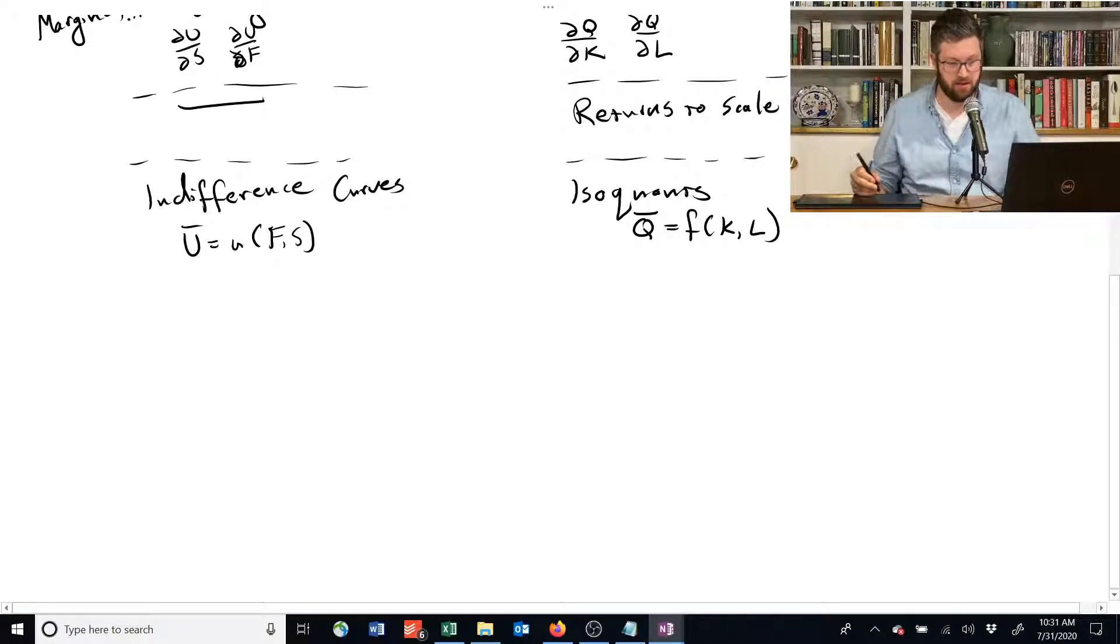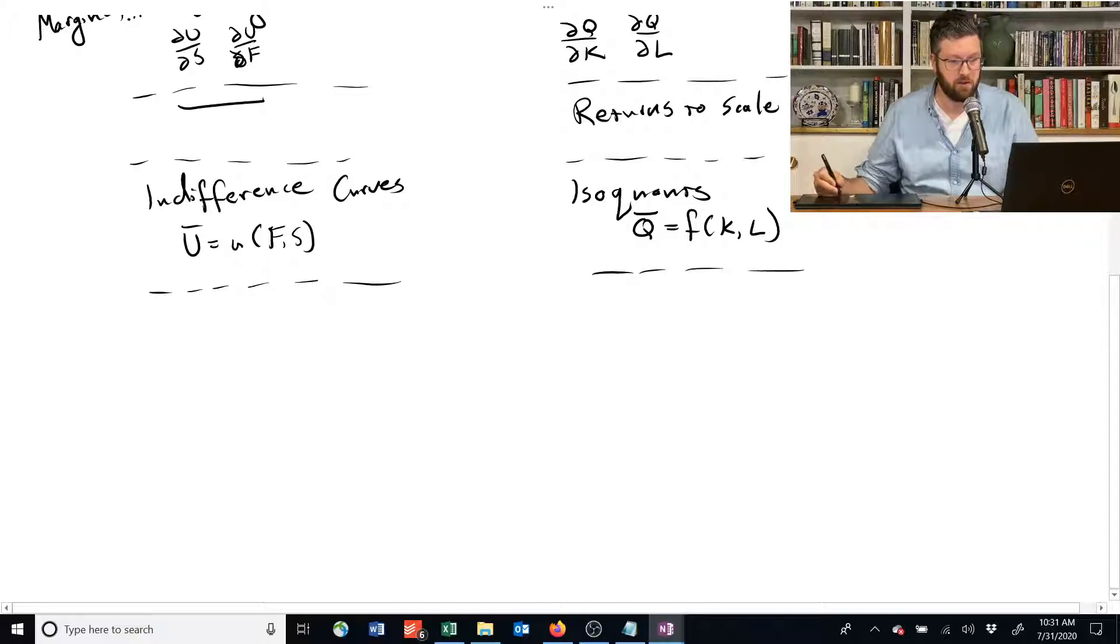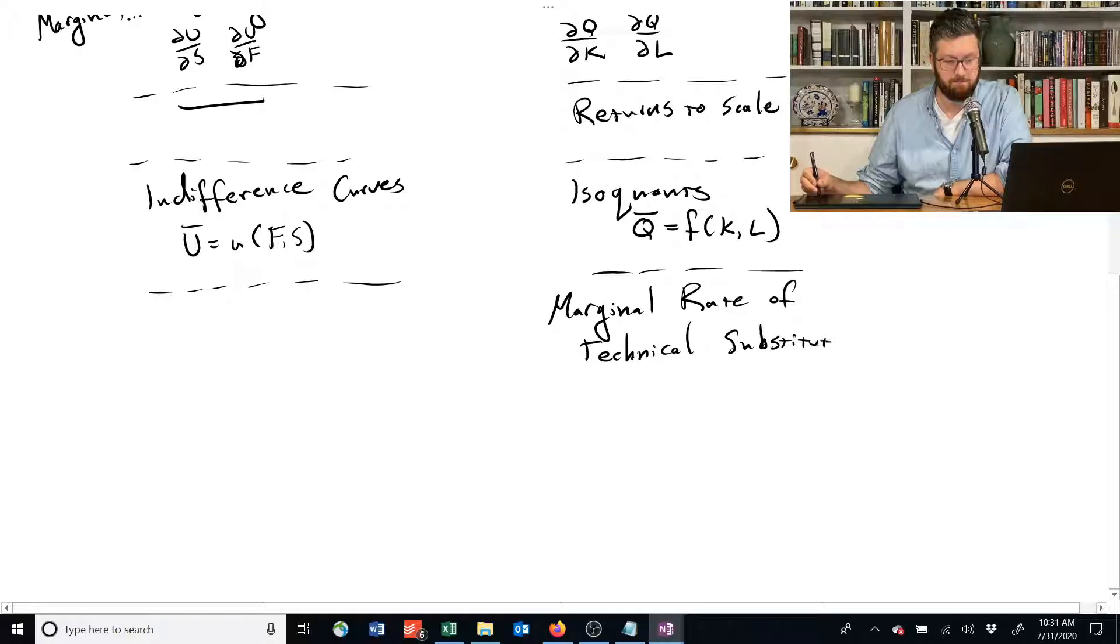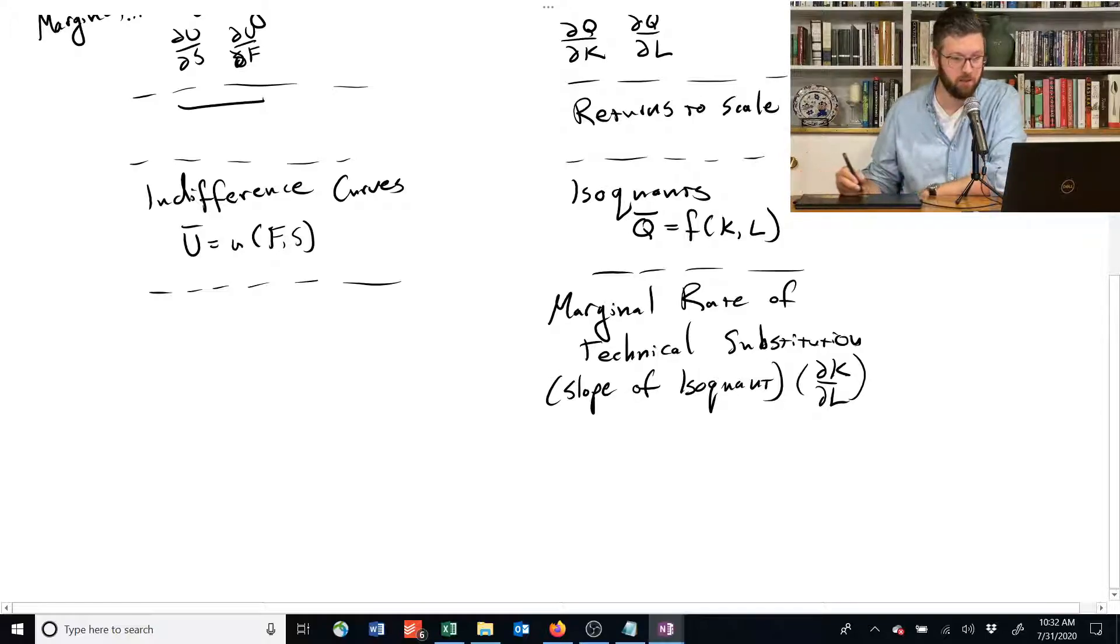And the last thing is we've got this parallel idea of the slope of these indifference curves or isoquants. So this is the marginal rate of technical substitution is the name for this guy. And it's the slope of an isoquant. And if you've got K on the vertical axis, it's the partial change in K with respect to L.